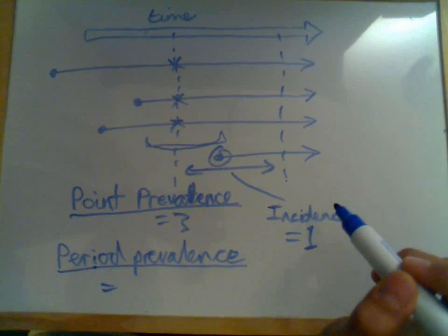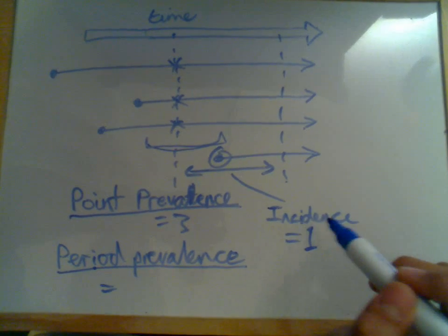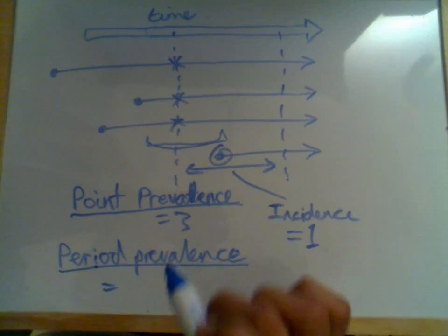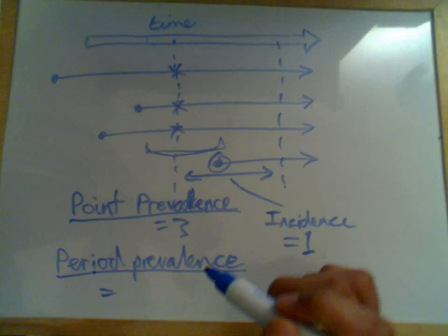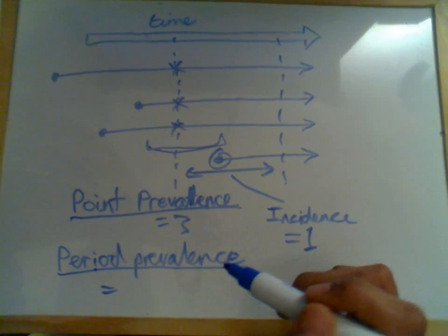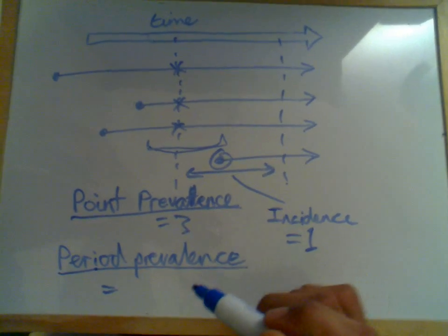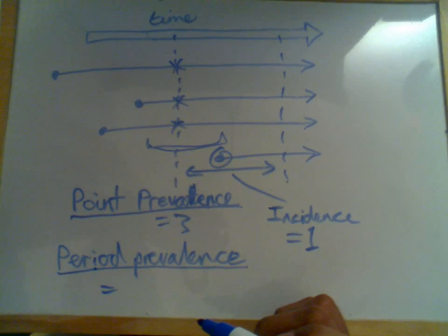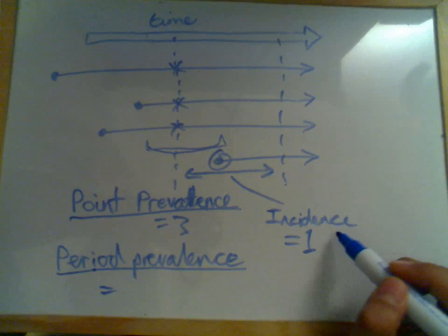Now that's actually different to incidence. Incidence is new cases of disease. In period prevalence, we know these people have disease, but we're looking for the episodes. We're looking for the acute exacerbations, the asthma attacks. And that's what period prevalence is all about. And that's what makes it different from point prevalence.